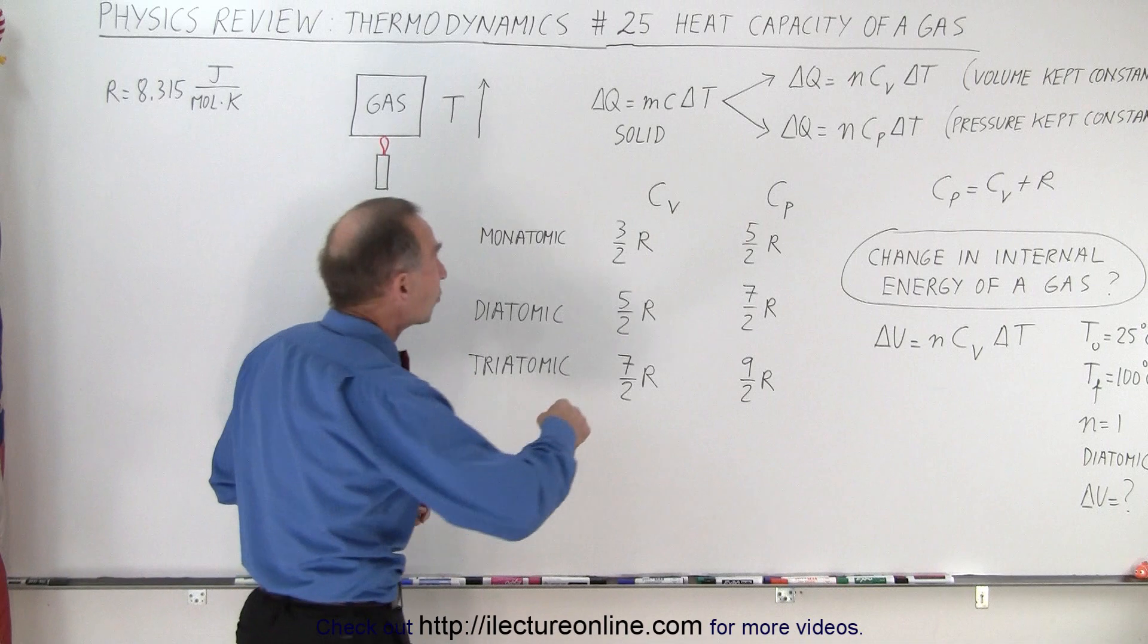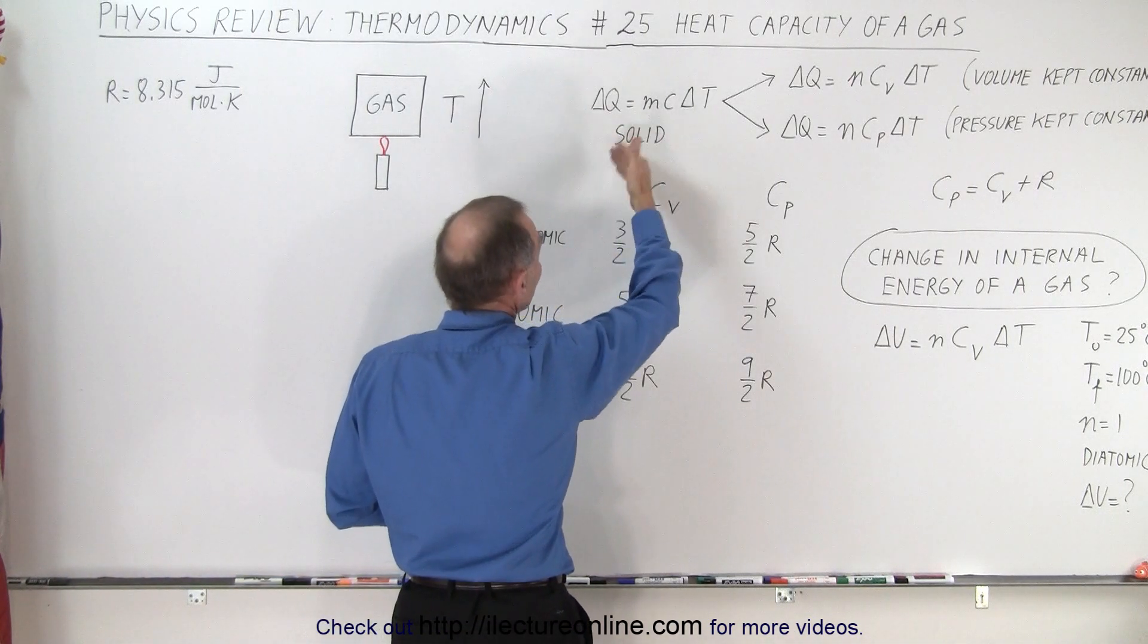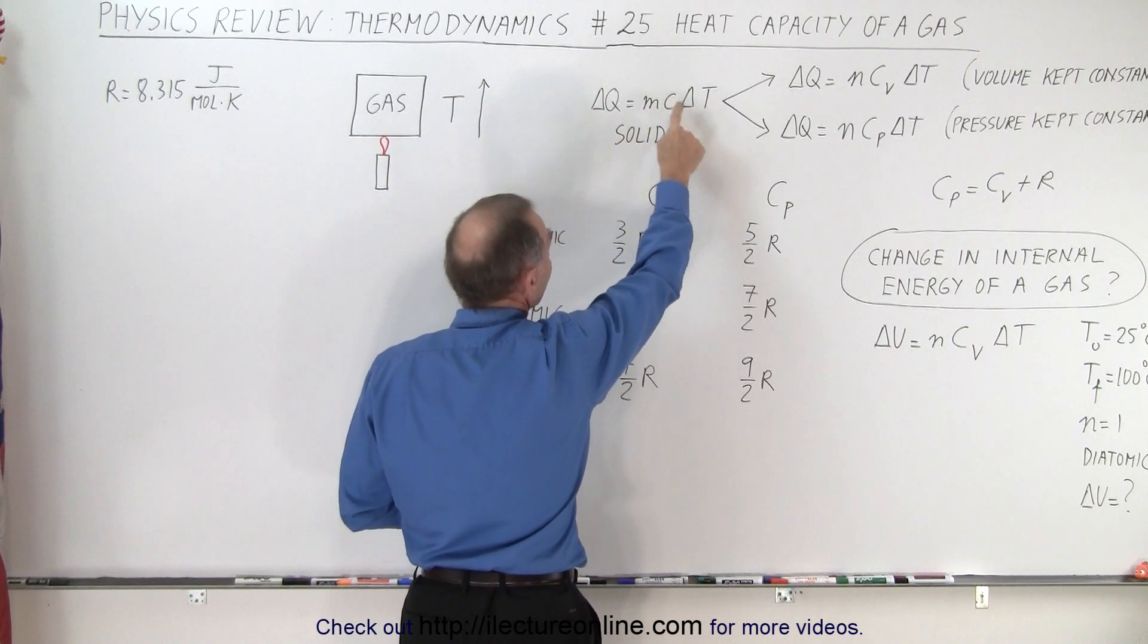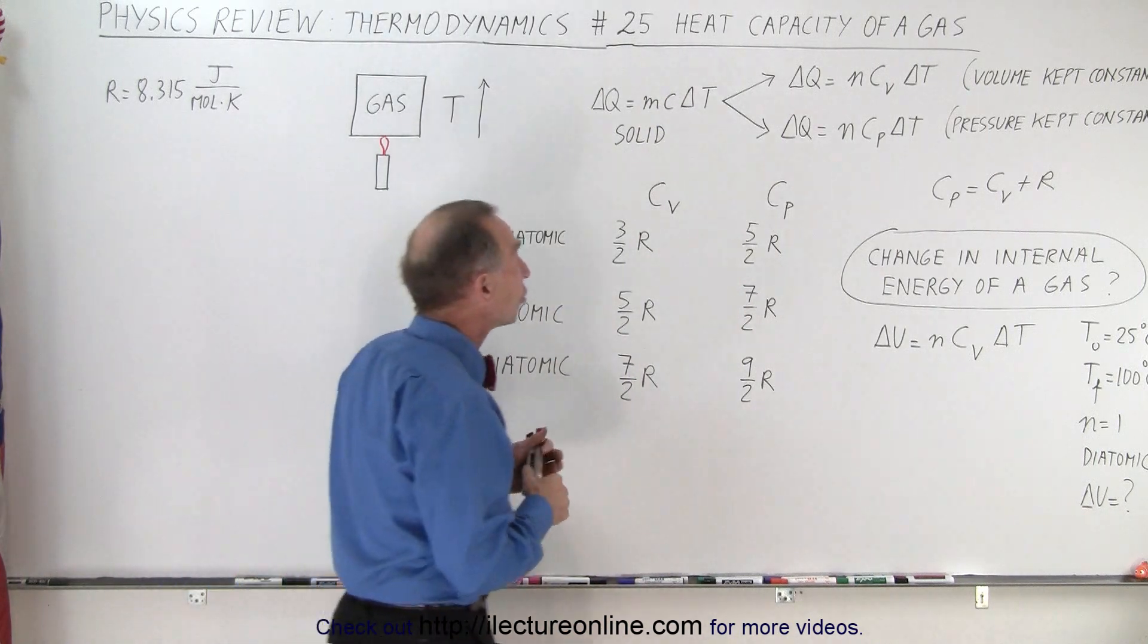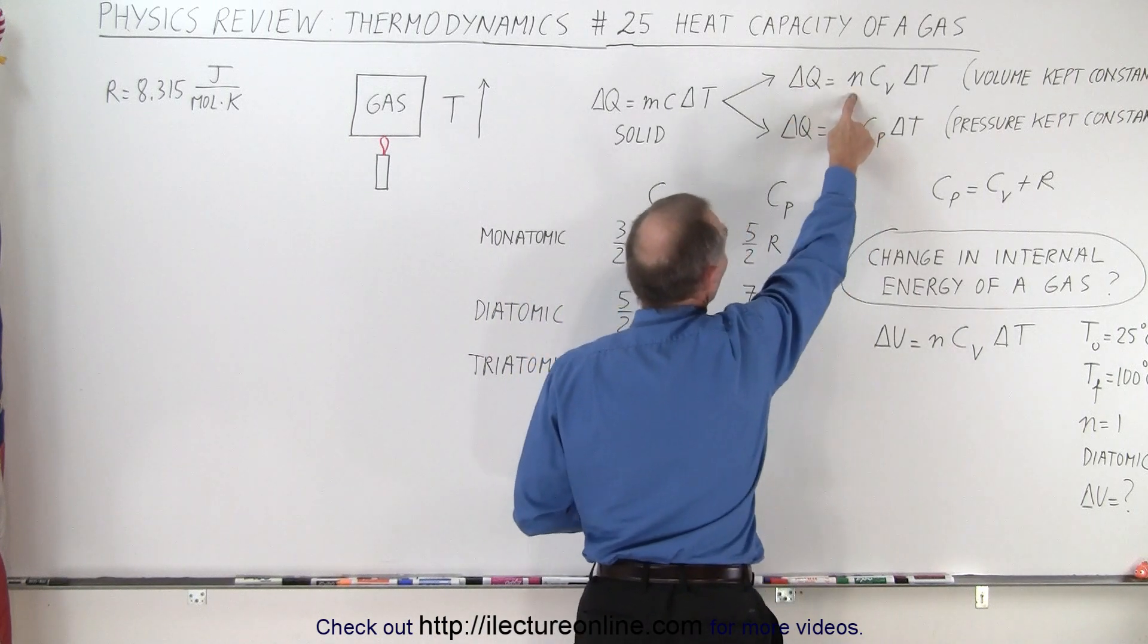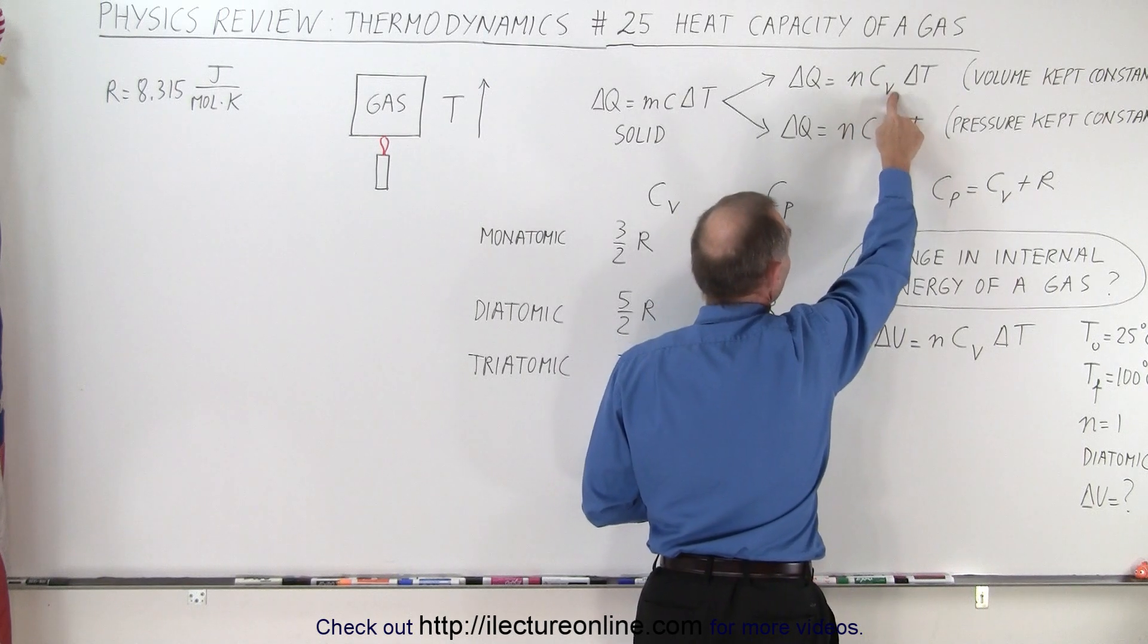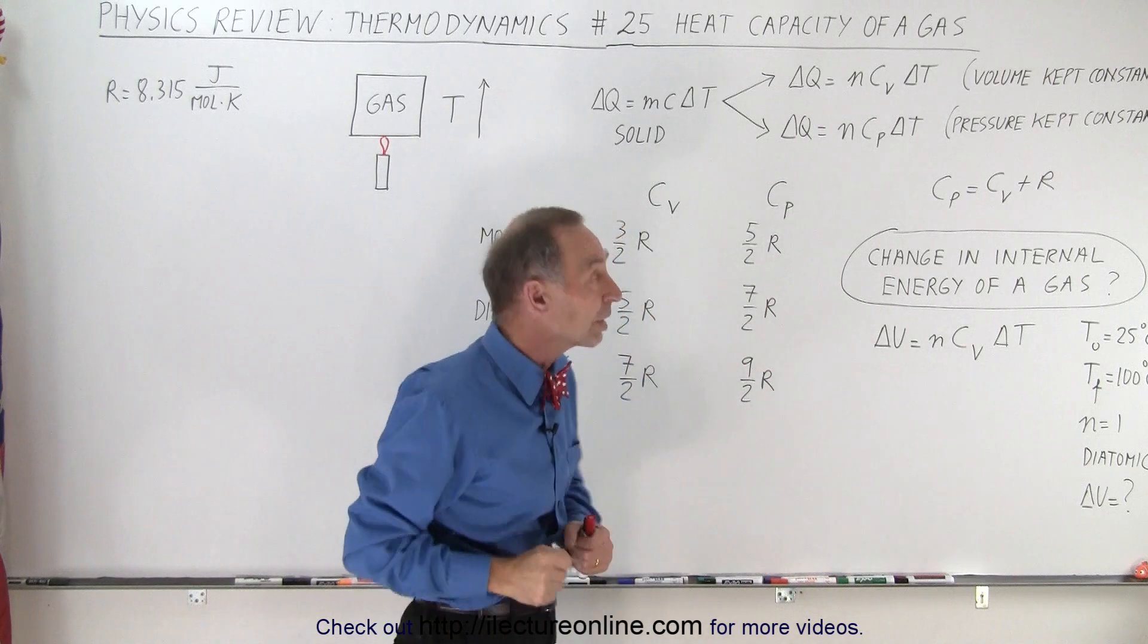So the simple equation that we used to use for a solid, where the change in the heat or the amount of heat applied will result in a change in the temperature depending upon the mass of the solid and the specific heat of the solid, that equation now changes into one of two equations. It can be ΔQ, the amount of heat added to the gas, equals the number of moles times the specific heat if the volume is kept constant, times the change in temperature.